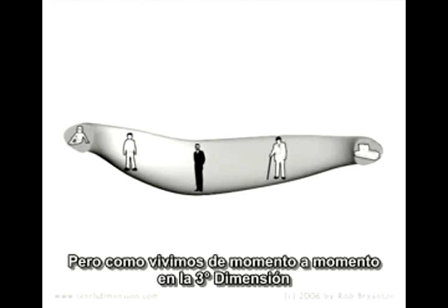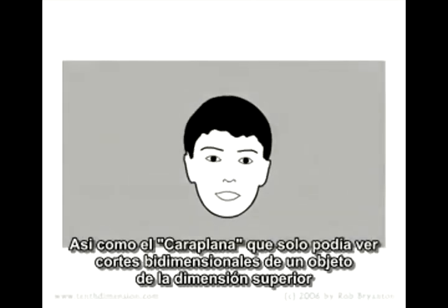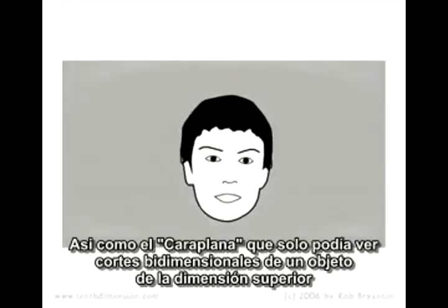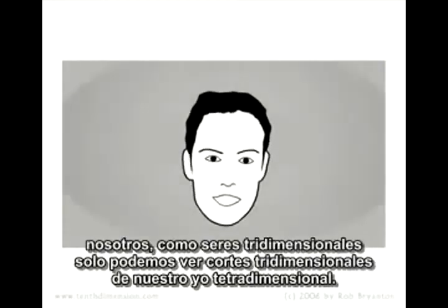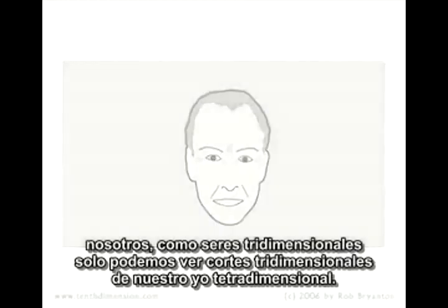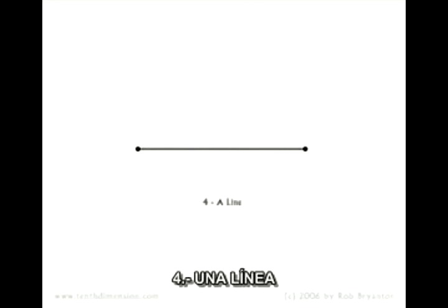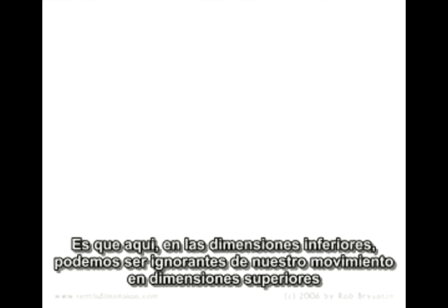Because we live from moment to moment in the third dimension, we're like our second-dimensional flatlanders. Just like that flatlander who can only see two-dimensional cross-sections of objects from the dimension above, we as three-dimensional creatures can only see three-dimensional cross-sections of our fourth-dimensional self. One of the most intriguing aspects of dimensions stacked on one another is that down here in the dimensions below, we can be unaware of our motion in the dimensions above.